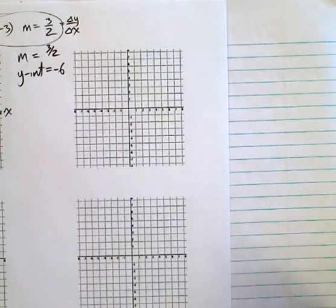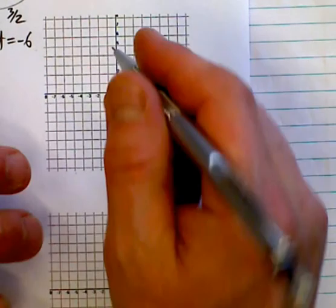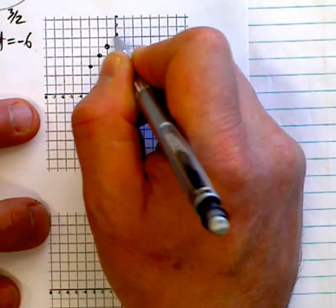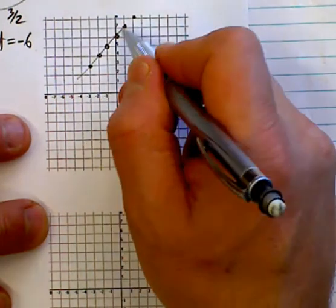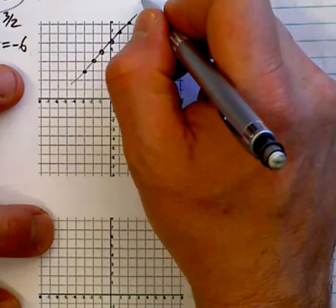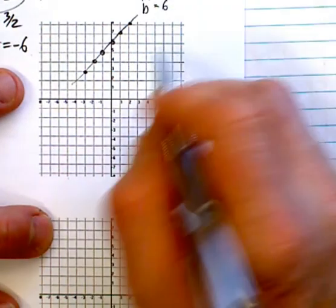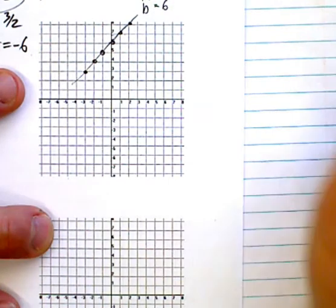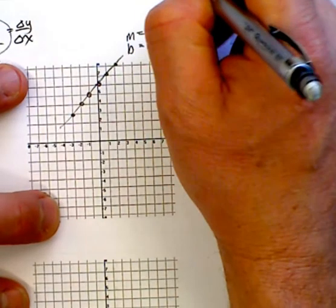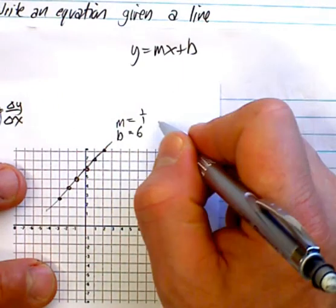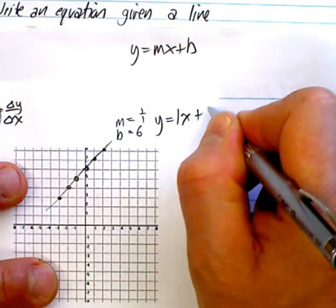So let's see if we can write an equation given a line. If I gave you this line right here, would you be able to find the equation? Well, what you do is you identify the slope and the y-intercept. The y-intercept is pretty easy — counting up, it crosses at 6. Your slope is up 1 over 1. So when you want an equation, you plug those values into m and b. It's going to be y equals 1x plus 6. And there is the equation of that line.